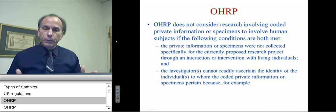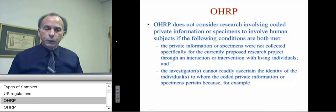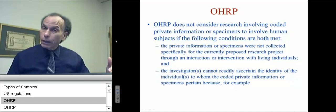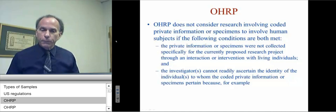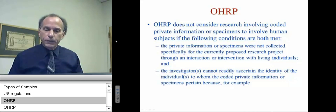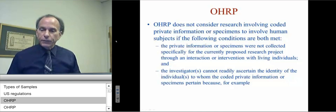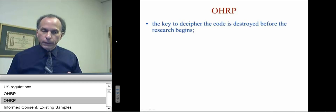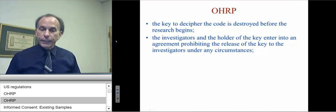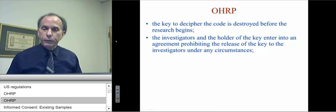OHRP, the Office of Human Research Protection, also has guidance regarding this issue. OHRP does not consider research involving coded private information or specimens to involve human subjects if the following conditions are both met: the private information or specimens were not collected specifically for the currently proposed research project through an interaction or intervention with living individuals, and the investigators cannot readily ascertain the identity of the individuals — because the key to decipher the code has been destroyed before the research begins, and hence you cannot access the identifiers.